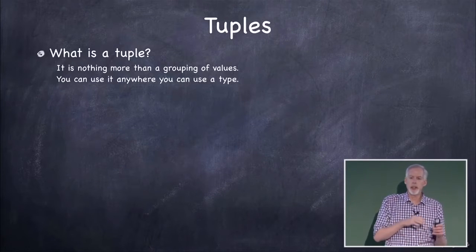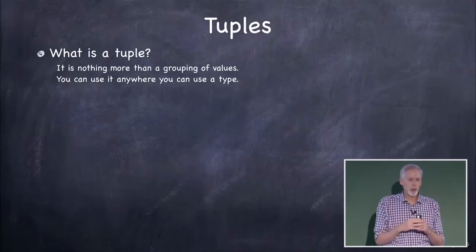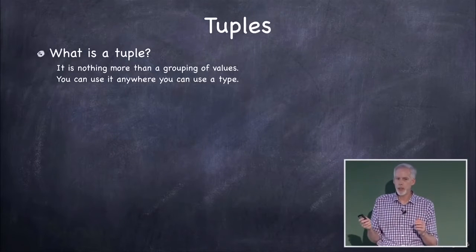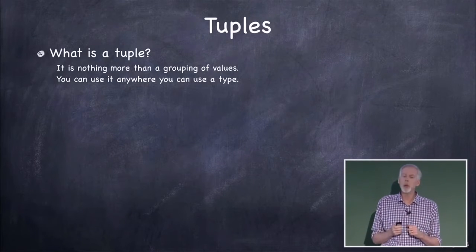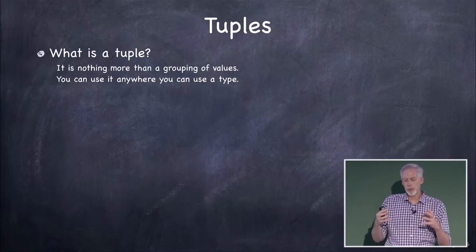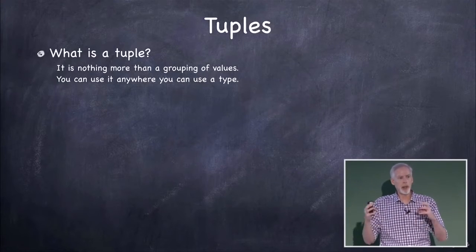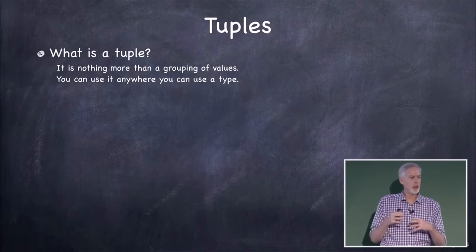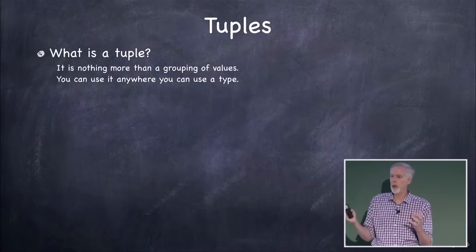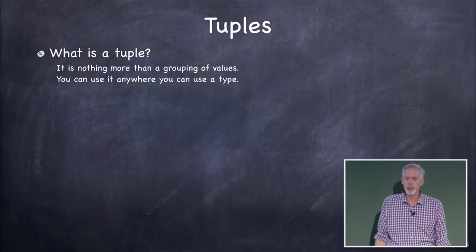Alright, so let's talk about another thing: tuples. Tuples are a type in Swift. They're really cool. They're basically a way to build a type out of other types by grouping them. You can use it anywhere you can use a type. A tuple can be used anywhere types are valid.